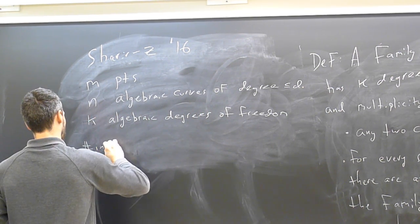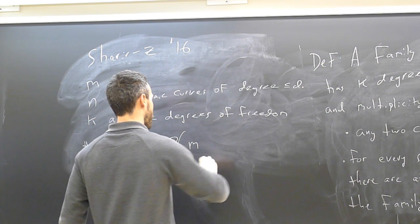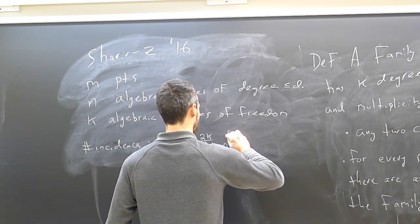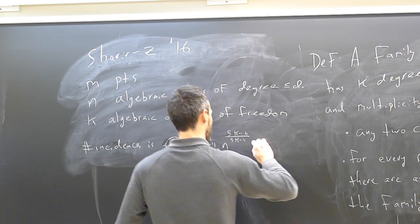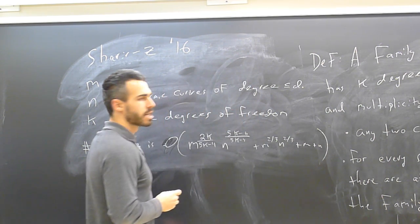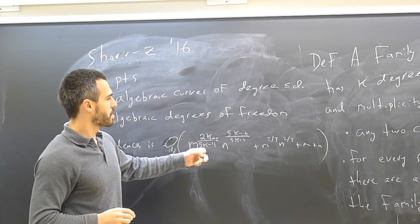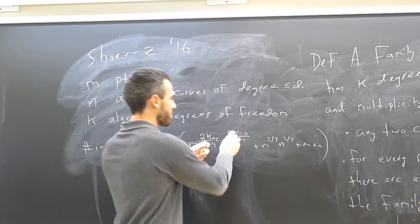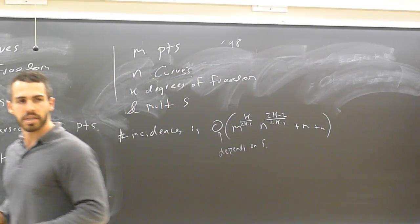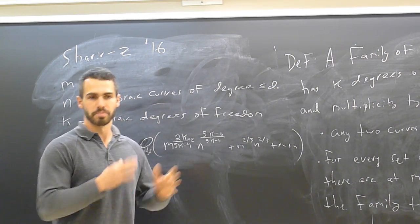The number of incidences is O(m^{2k/(5k-4)} · n^{(5k-6)/(5k-4)} + m^{2/3} n^{2/3} + m + n), where the big-O depends on d and an epsilon. These exponents are better than the Pach-Sharir exponents, though neither set is likely optimal. When k equals 2 (lines or unit circles), we recover exactly the Szemerédi-Trotter bound m^{2/3} n^{2/3}, so this is a genuine generalization.